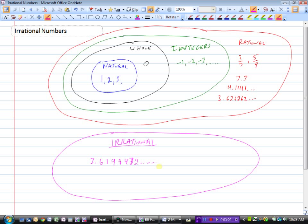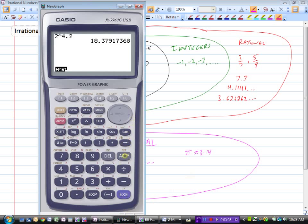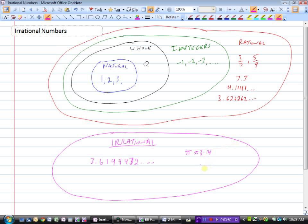Now there are some famous ones, like pi. Pi we say is approximately 3.14, but if I get my calculator out and punch in pi, it says 3.14159265... and it actually goes on forever. It just doesn't show all the decimals.